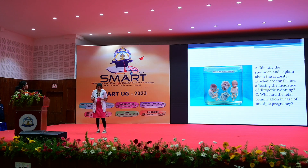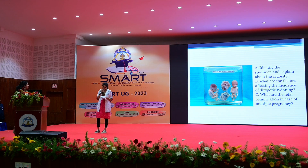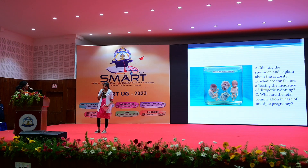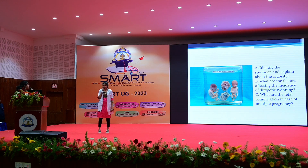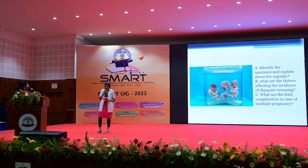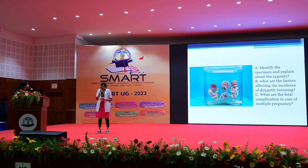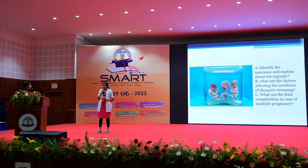What are the factors affecting the incidence of dizygotic twinning? The factors include ethnic group — high rates in Nigeria — increased maternal age, family history of twinning, ovulation induction resulting in multiple ovulation, and assisted reproductive techniques. What are the fetal complications in case of multiple pregnancy? They can be antepartum and intrapartum. Antepartum: prematurity, monozygotic twin complications, miscarriage, conjoined twins, congenital abnormalities, and fetal growth restriction. Intrapartum: premature rupture of membranes, cord prolapse, malpresentation of second twin, and interlocking.